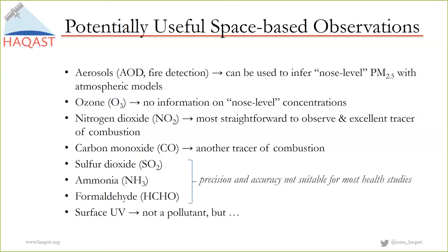Ammonia gives us a great idea of when fertilizer is being applied to fields around the world. This is an experimental product that people are beginning to use more frequently as it matures. Formaldehyde is produced directly from industry but also through natural processes. For these three pollutants, the precision and accuracy is not suitable for most health studies, but the data sets are very useful. Surface ultraviolet radiation — not a pollutant — has been used by the health community for several decades to study the effect of surface UV radiation.